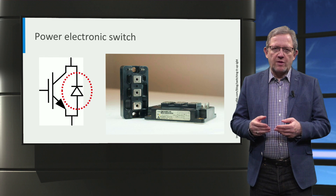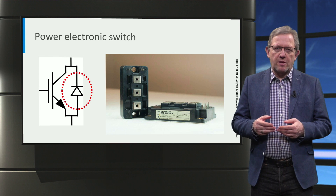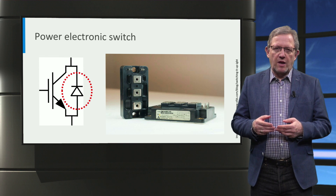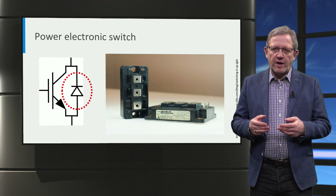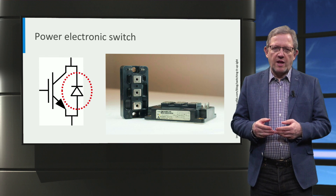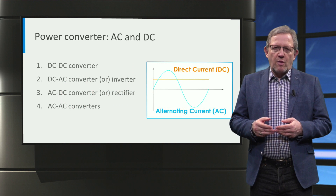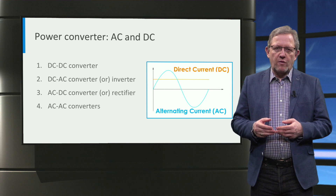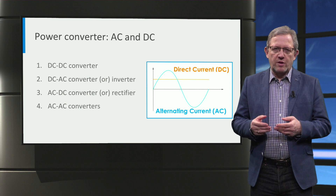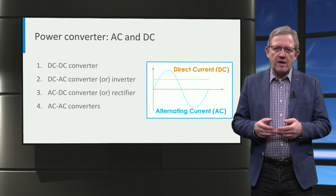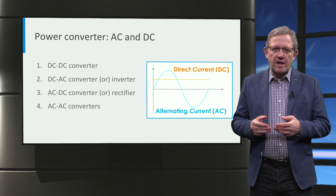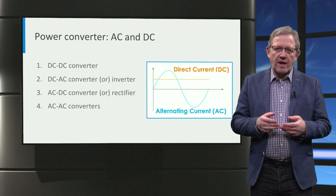The other commonly used semiconductor devices in power converters are metal-oxide semiconductor field effect transistors, or MOSFETs, and thyristors. The most common way to classify power converters is based on whether the input is AC or DC and the output AC or DC — that is, if it is an alternating current or direct current.